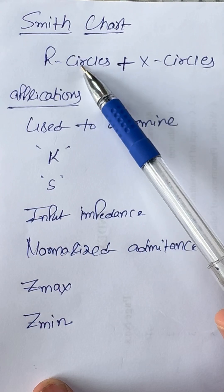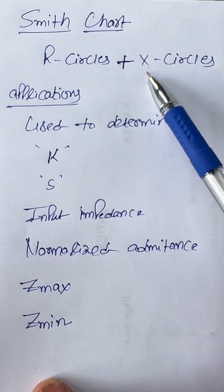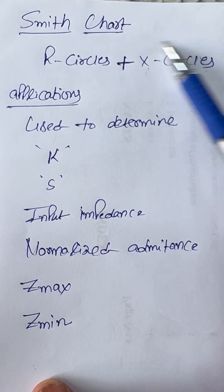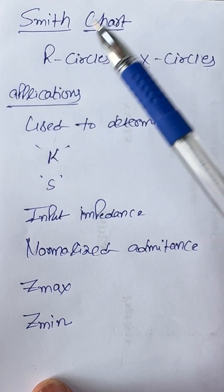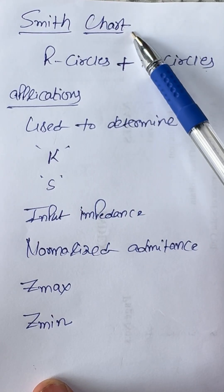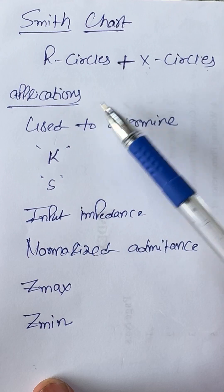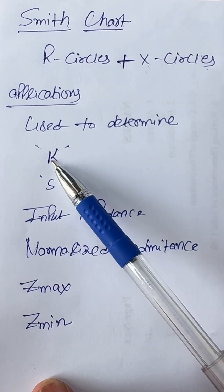R circle means real value circles, X circle means imaginary value circles. Whenever these two circles are combined, Smith chart is formed and by using Smith chart, we can determine reflection coefficient,